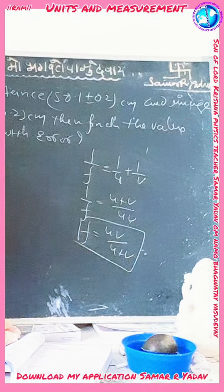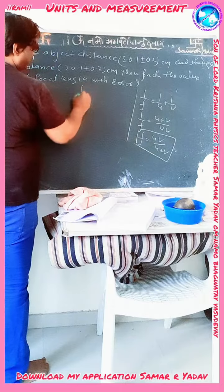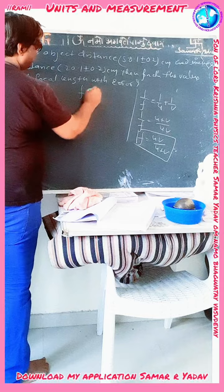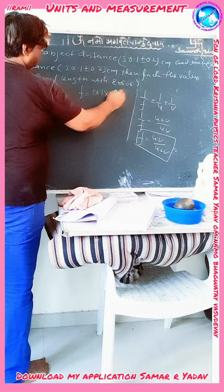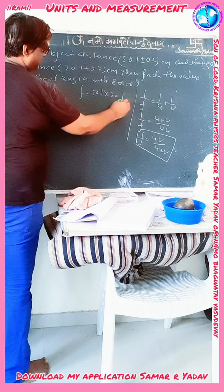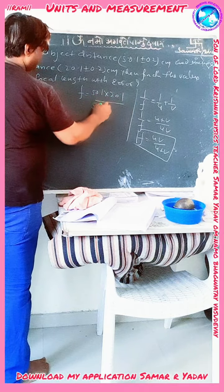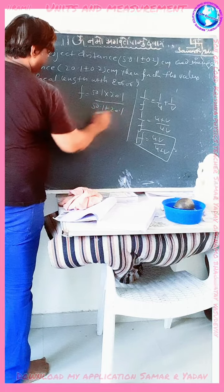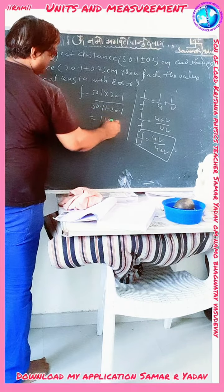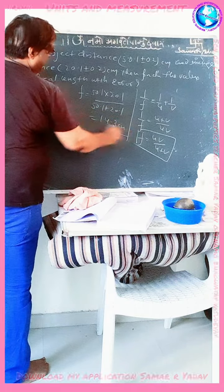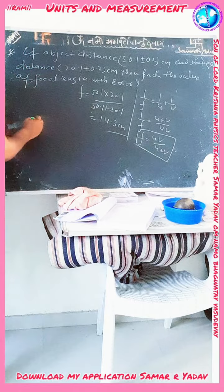Substituting the values, f = (50.1 × 20.1) / (50.1 + 20.1), which gives f equal to 14.3 centimeters. Now we will calculate the partial error.